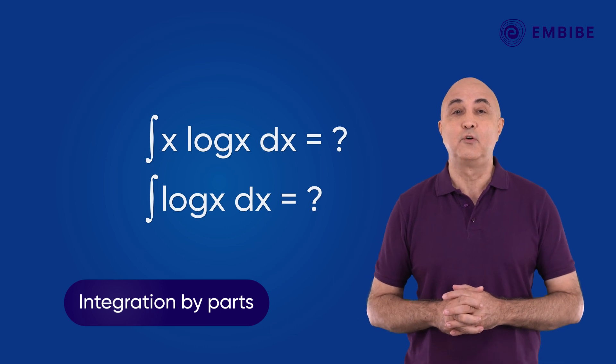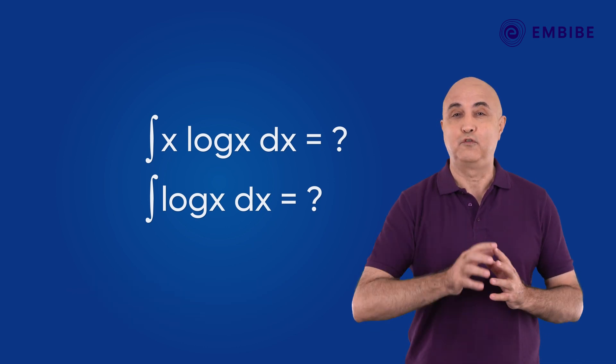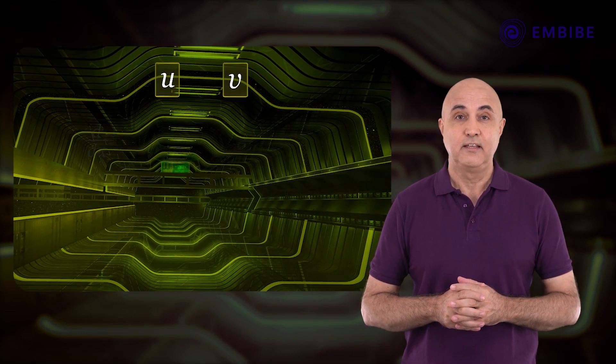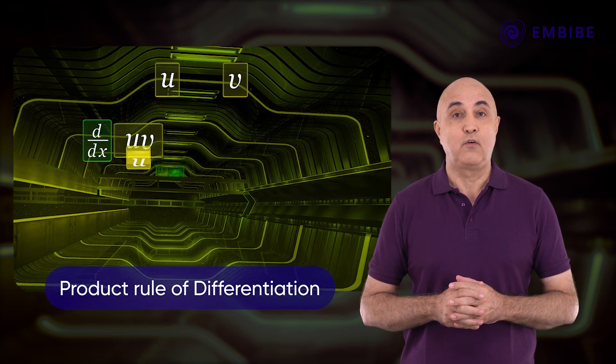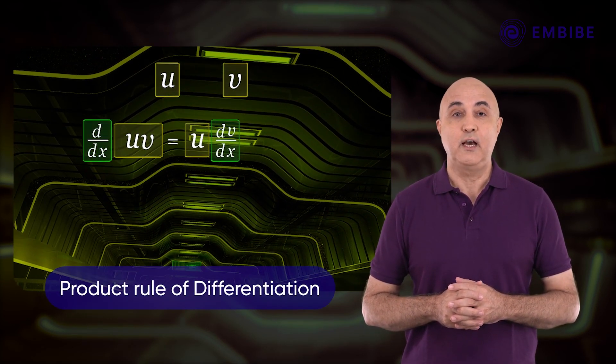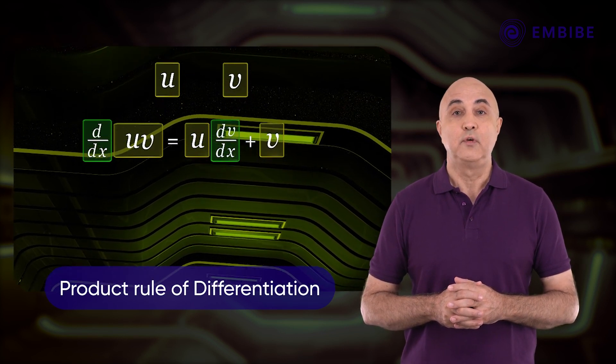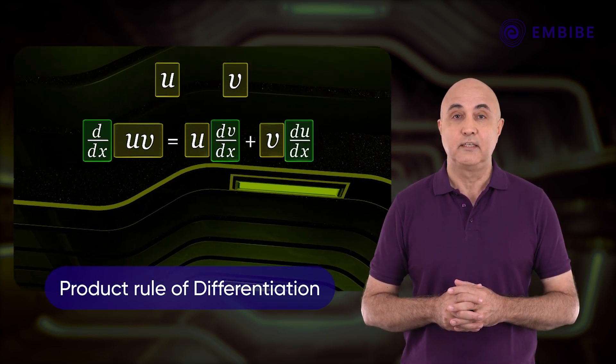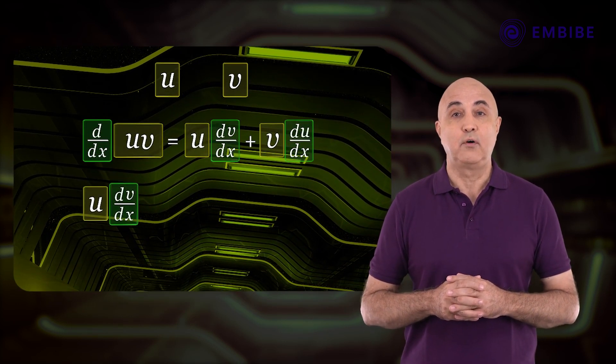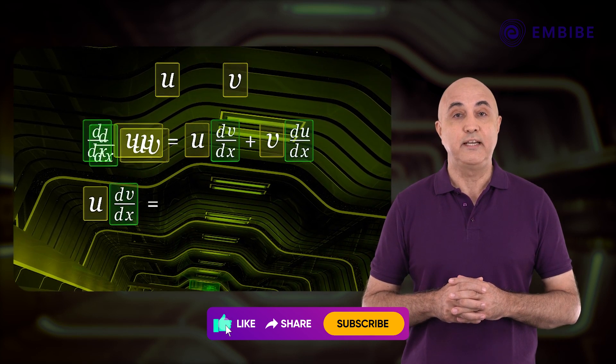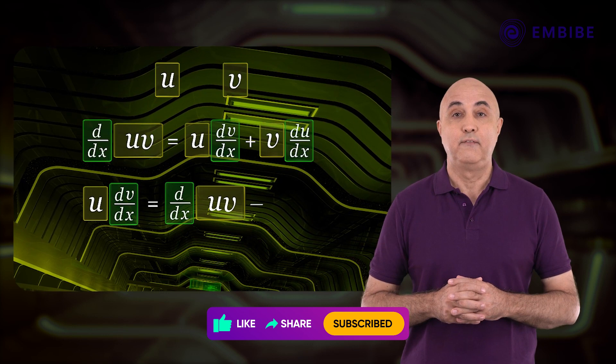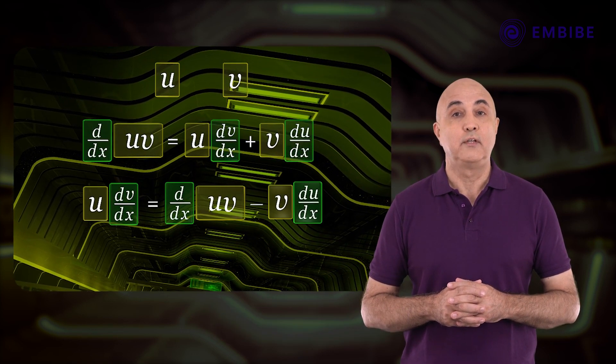Continue watching to know the rule with proof. If u and v are two functions of x, then d by dx of uv is equal to u into dv upon dx plus v into du upon dx. This implies that u into dv upon dx is equal to d by dx of uv minus v du upon dx.